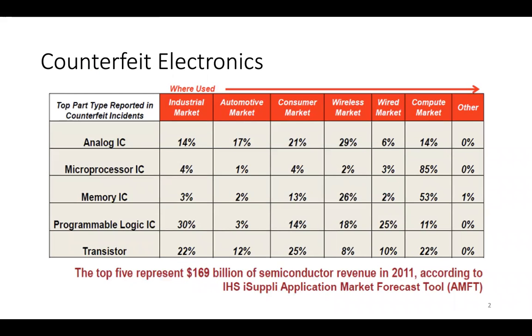As you can see, the top five types of ICs reported in counterfeit instances are analog, microprocessor, memory, programmable logic, and transistors. These five categories contributed to $169 billion of semiconductor revenues in 2011.